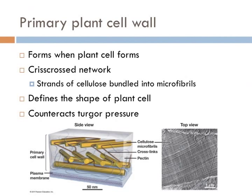Turgor pressure pushes the plasma membrane against the cell wall of the plant. This pressure, called turgidity, is caused by the flow of water from an area of low solute concentration outside of the cell into the cell's vacuole, which has a higher solute concentration. Healthy plant cells are turgid, and plants rely on turgidity to maintain a rigid structure. This is what allows them to grow upright.